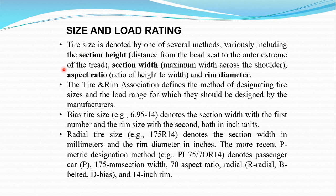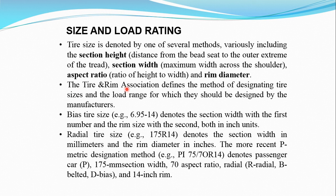The section height is the distance from the bead seat to the outer extreme of the tread. The section width is the maximum width across the shoulder of the tire. The aspect ratio is the ratio of height to width in percentage. The rim diameter completes the size specification. The Tire and Rim Association defines what designated tires can be used per different loading conditions and vehicles.